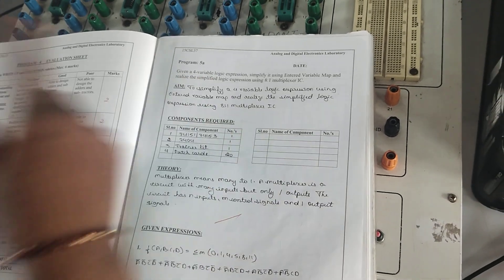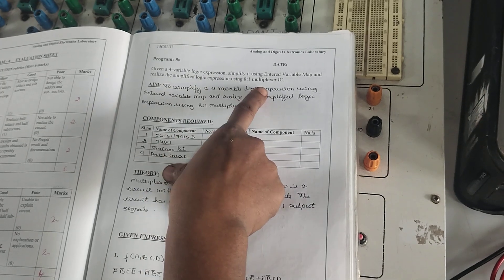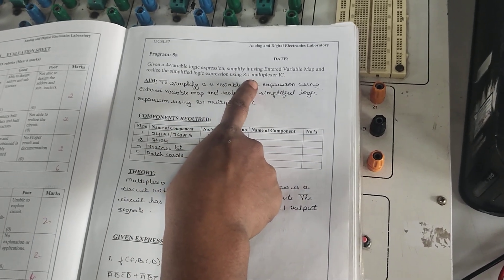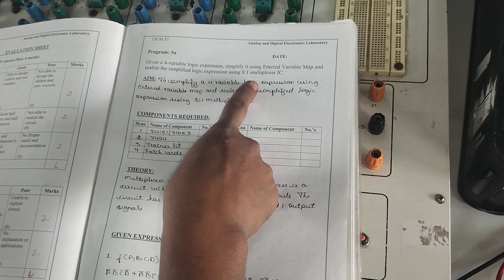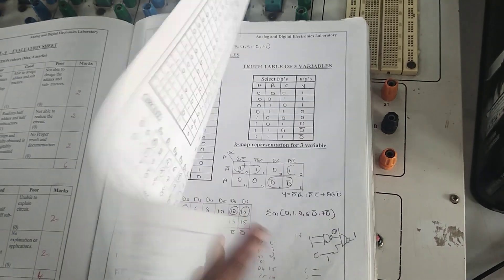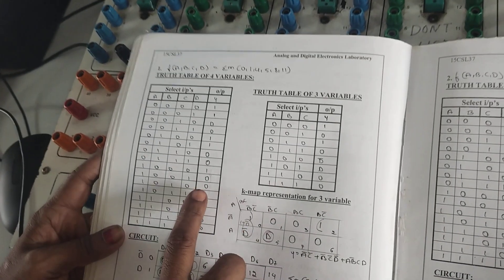For the next program, we have to learn the multiplexer concept. The multiplexer we can realize by using 4 variables. Using 4 variables, I have to reduce into 3 variable inputs because I have to implement using an 8-to-1 multiplexer. So whenever I think about 8-to-1 multiplexer, we have to use the truth table concept.